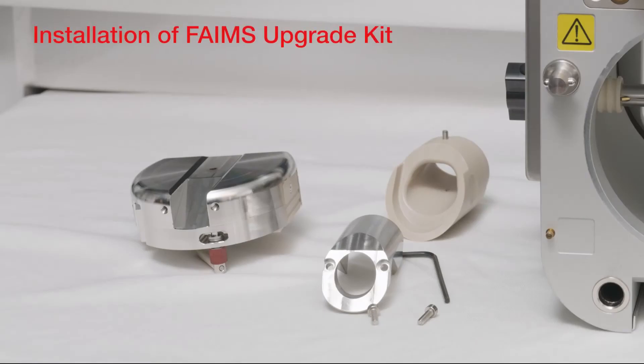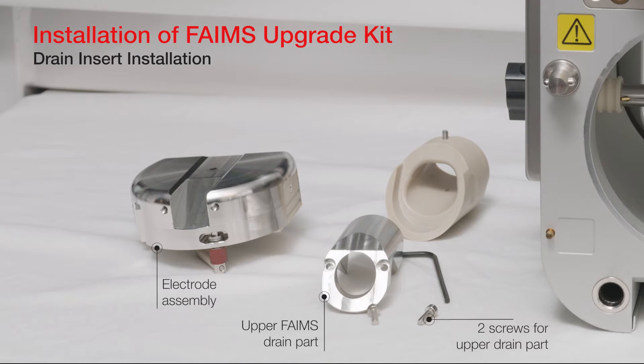Both FAIMS Pro and FAIMS Pro Duo can be used for both low and high flow applications. However, when using the FAIMS Pro interface in high flow applications, an upgrade kit needs to be installed. This kit includes the electrode assembly, the upper FAIMS drain part, two screws to attach the upper drain part, a two-millimeter hex key, and the lower FAIMS drain part.